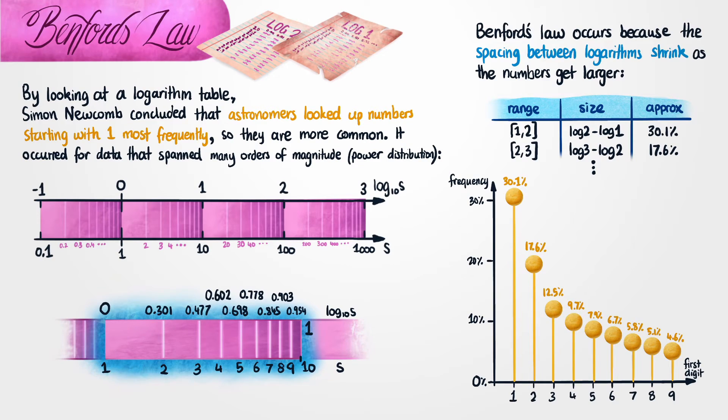So from this graph, we can see the numbers that begin with 1 occur 30.1% of the time. Numbers that start with 2 happen 17.6% of the time. But then after this, they drop off pretty quickly. If you start with 3, that happens 12.5% of the time, and so on. So this graph here is the basic prediction of Benford's Law.